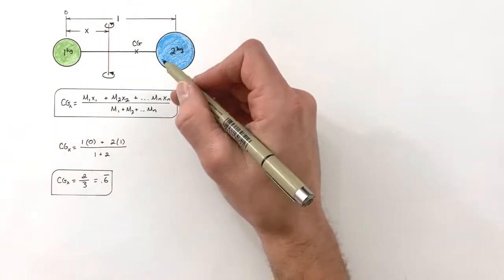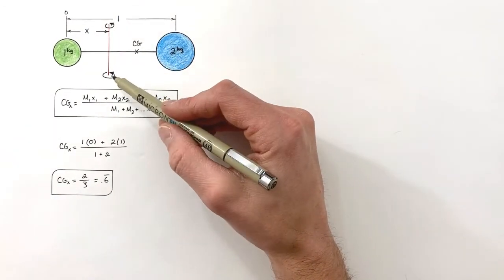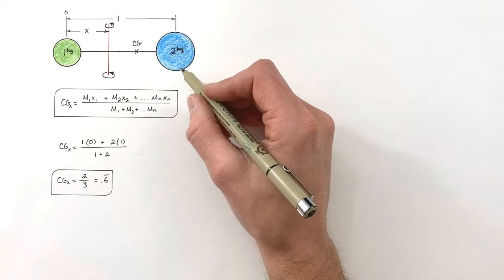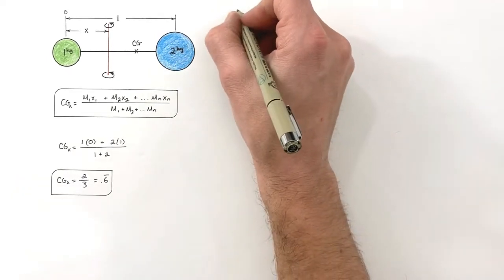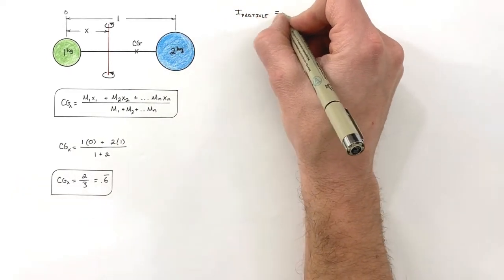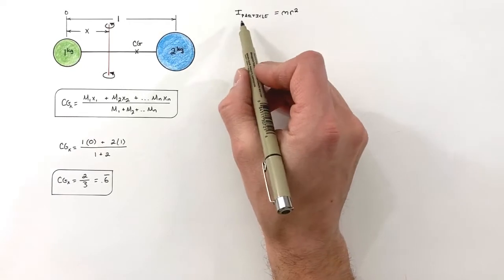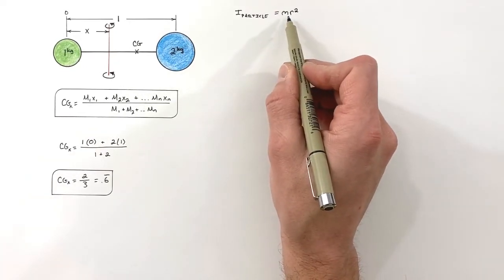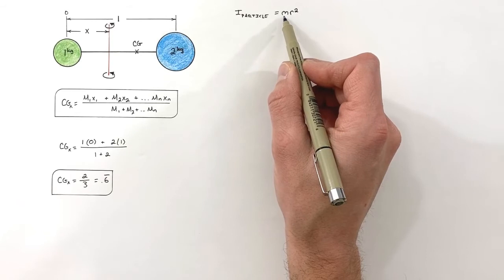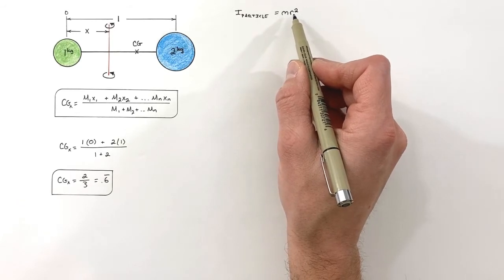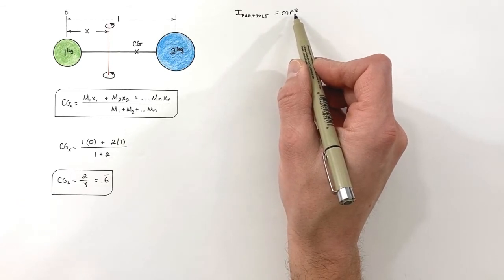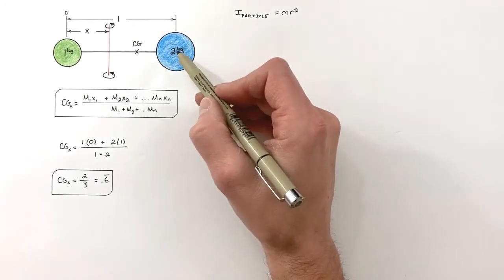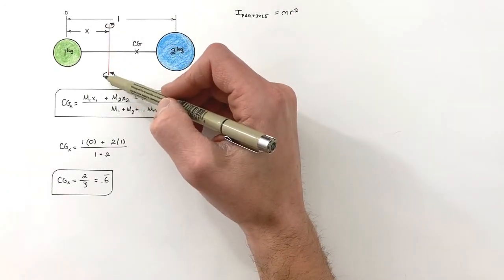To generate an equation for the rotational moment of inertia, let's first take a look at the rotational moment of inertia of a particle. The rotational moment of inertia of a particle is given by the equation mr², where m is the mass of the particle and r is the distance between the particle and the axis of rotation.